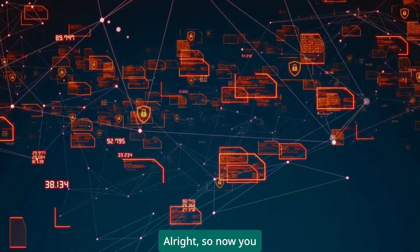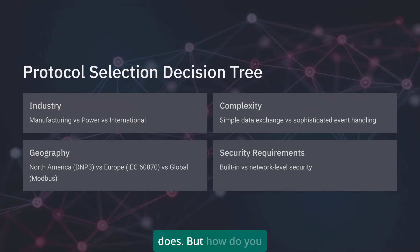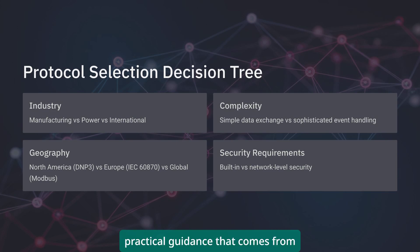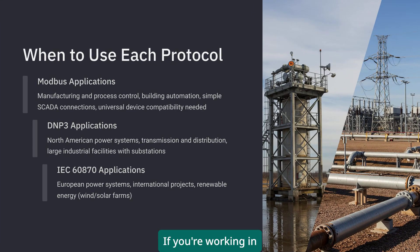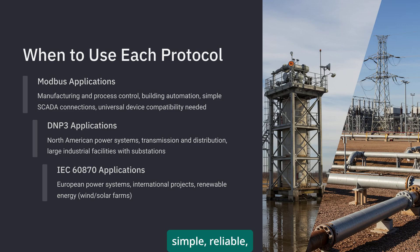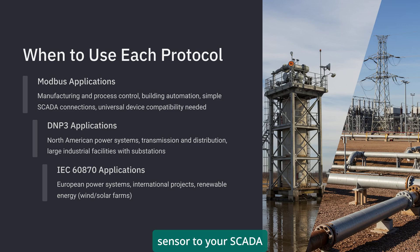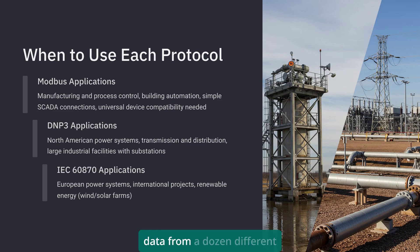All right, so now you understand what each protocol does — but how do you choose which one to use? Let me give you the practical guidance that comes from actually implementing these things. If you're working in manufacturing, process control, or building automation, Modbus is probably your best bet. It's simple, reliable, and everything speaks it. Need to connect a temperature sensor to your SCADA system? Modbus RTU over RS-485. Want to read data from a dozen different PLCs on your plant network? Modbus TCP will do the job beautifully.